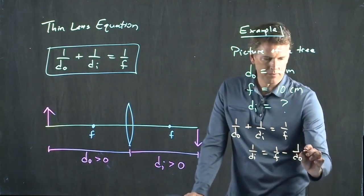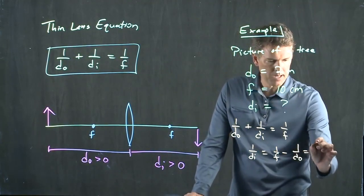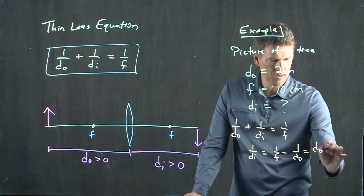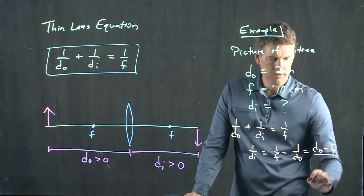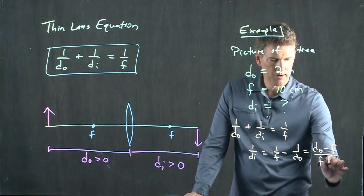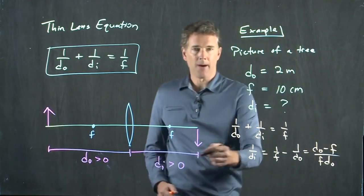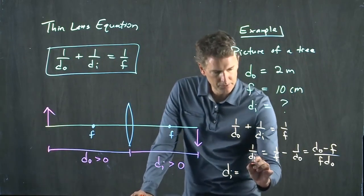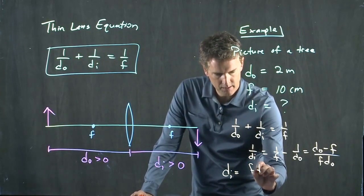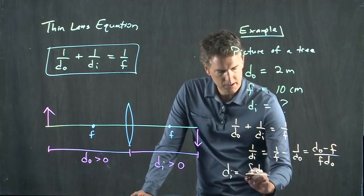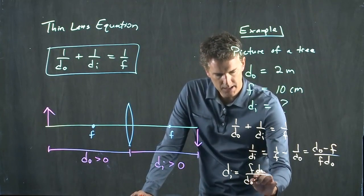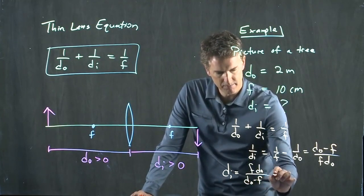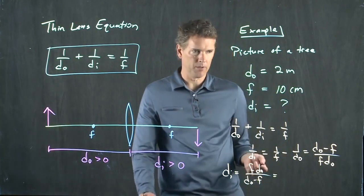And I can rewrite this slightly. If I multiply up by DO, multiply up by F, divide by the common denominator, and now I can flip it. So what is DI? It's equal to F DO divided by DO minus F. And now we have all those numbers.